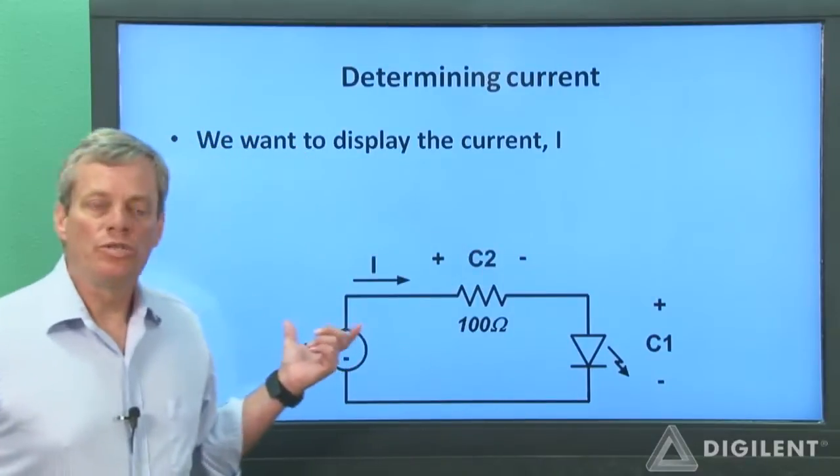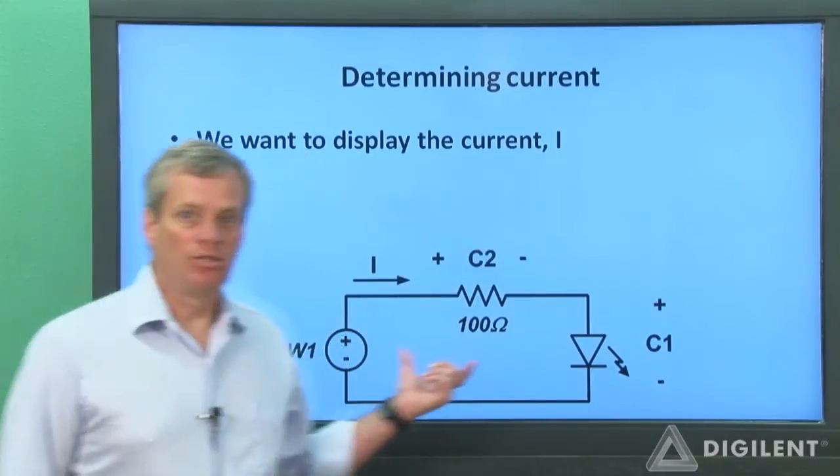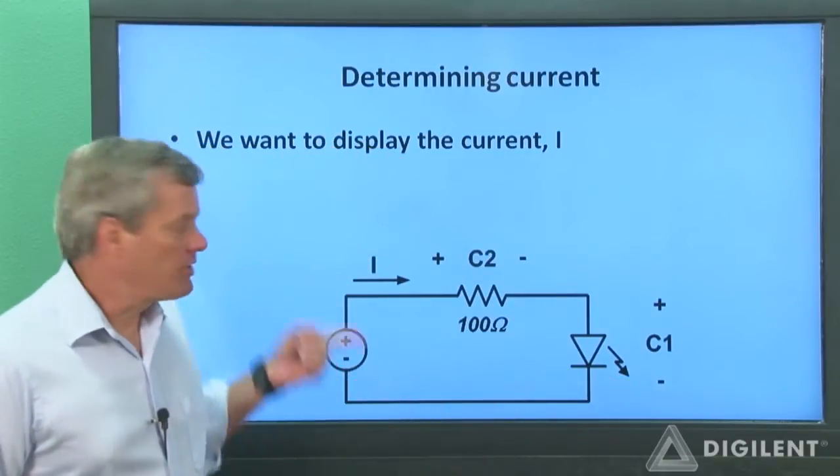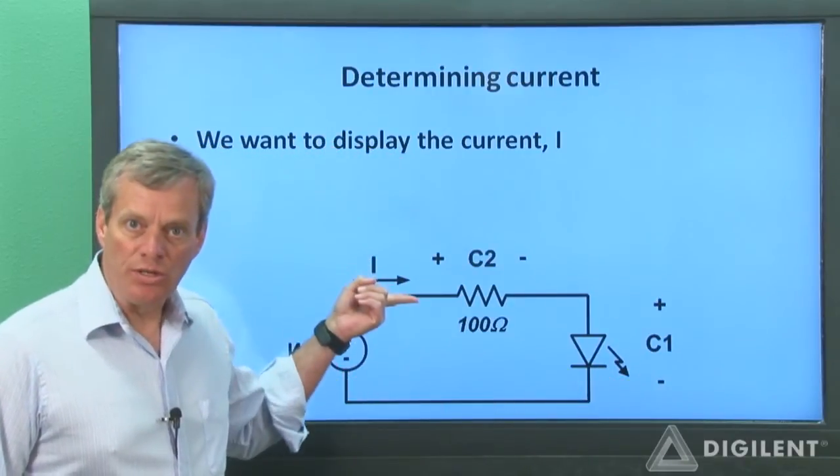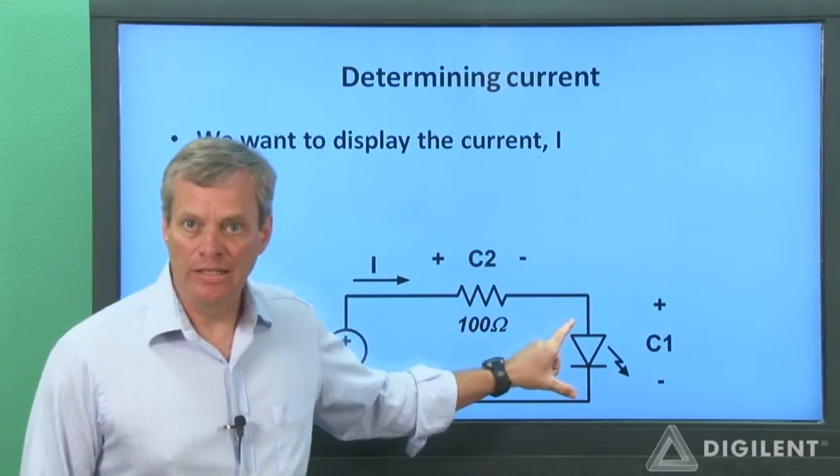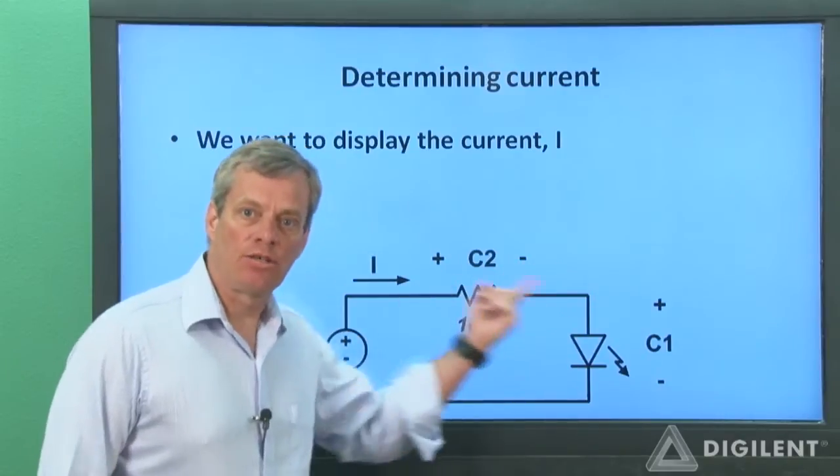Here's our circuit. We're using channel 1 of the waveform generator to apply a triangular voltage waveform to the LED. We want to determine the current delivered by the source. That current is the same as the current through the resistor and the current through the LED, since there's nowhere else in this circuit for the current to go.